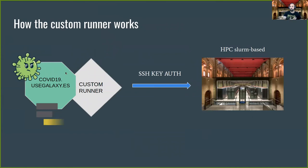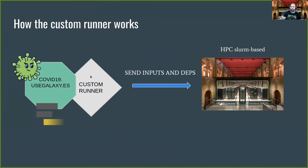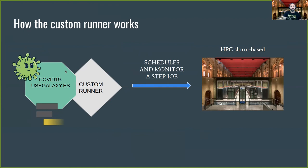To explain how the runner works, I'll quickly go over the main steps. The first step is the key exchange: if this is the first time the user issues a job, the runner creates a pair of keys and deposits them in the user's library. Then the user has to copy the public key to their MareNostrum account. Once authenticated, the runner sends the inputs as well as the software dependencies to the user's established folder in MareNostrum. After sending all the necessary data, the runner schedules the job and starts monitoring it. Finally, if the job ends successfully, the runner retrieves the data and copies it back to the Galaxy-established location for the dataset files.